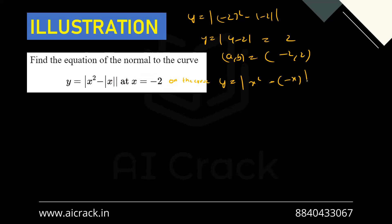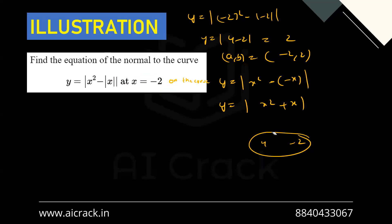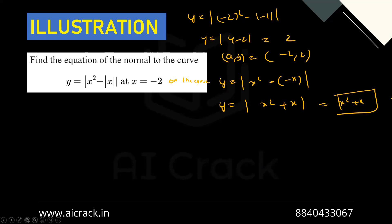At x = -2, x² + x = 4 - 2 = 2, which is positive, so the modulus opens as positive giving the function as x² + x. Note this simplification is valid only at x = -2; for other values the modulus would open differently. So we have the point (-2, 2) and the local function x² + x.